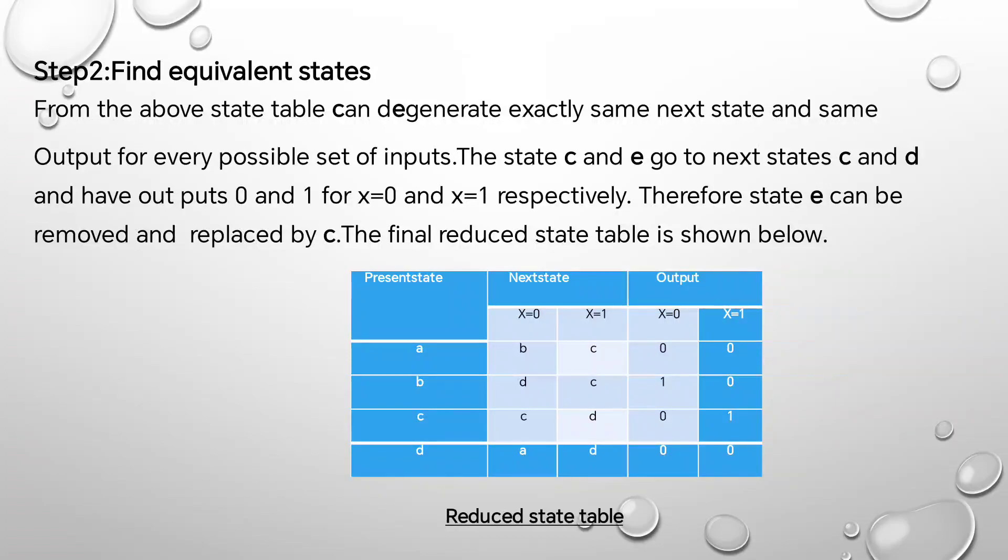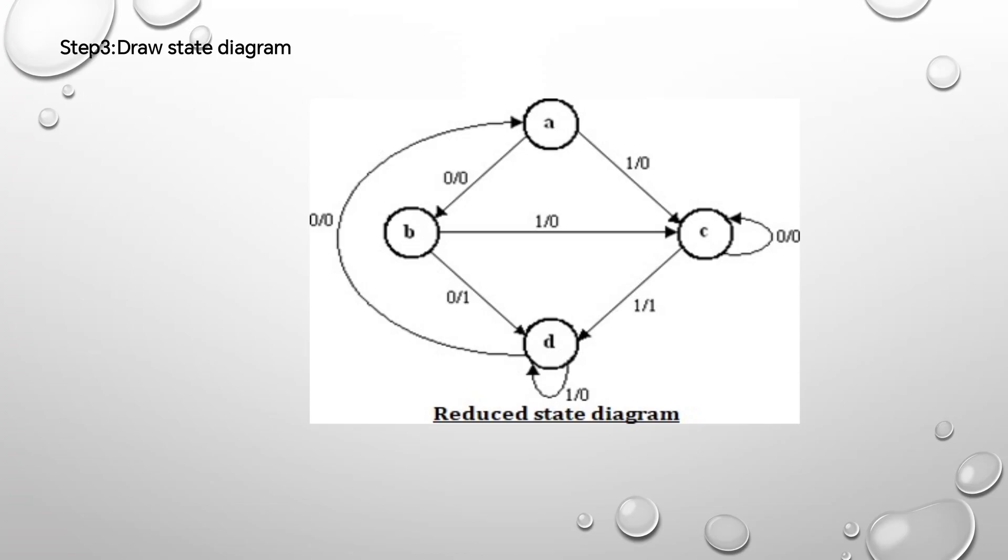The final reduced state table is shown below. This is the reduced state table. If two inputs are zero, we can consider that as reduced. This one is a reduced state diagram. Here state A is reduced.